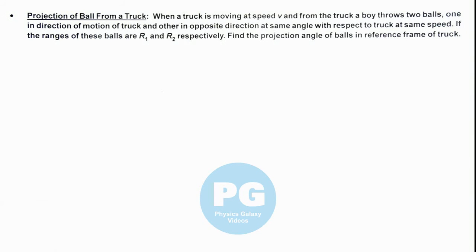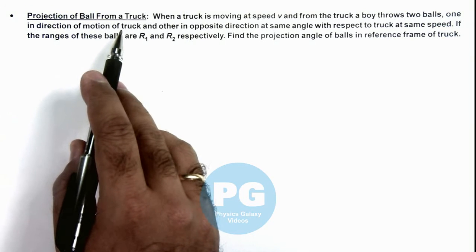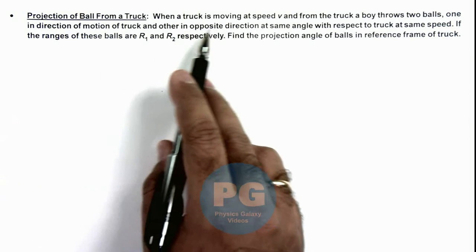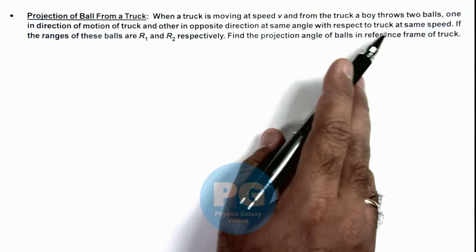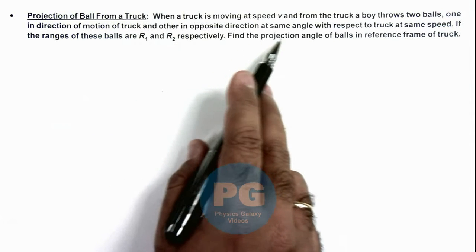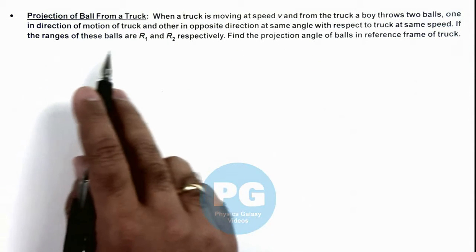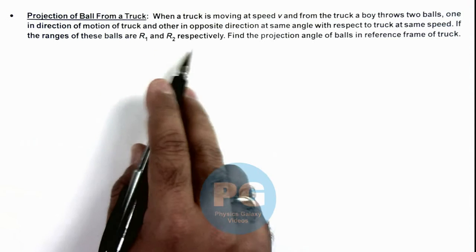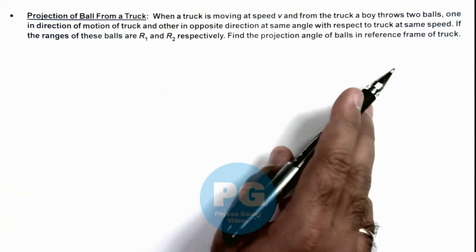In this illustration we'll discuss about projection of balls from a truck. Here we are given that when a truck is moving at speed v, and from the truck a boy throws two balls, one in direction of motion of truck and another in opposite direction at same angle with respect to truck at same speed. If ranges of these balls are r1 and r2 respectively, we are required to find the projection angle of balls in reference frame of truck.